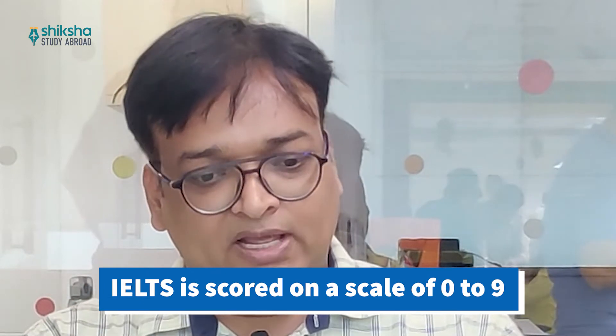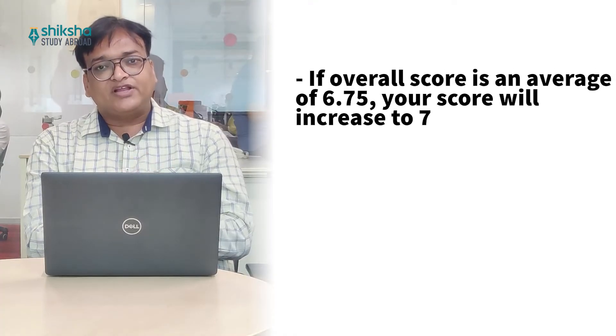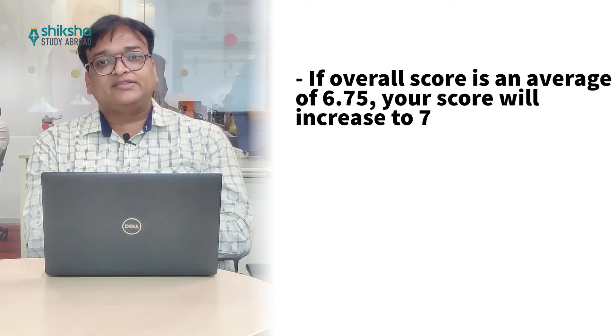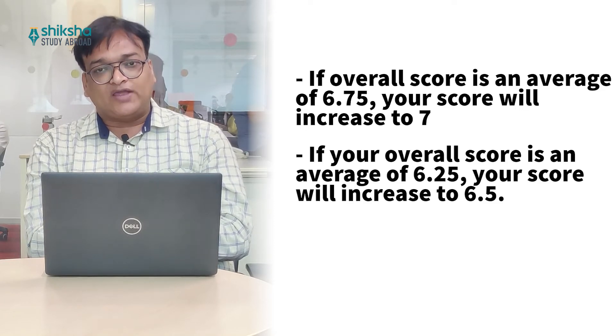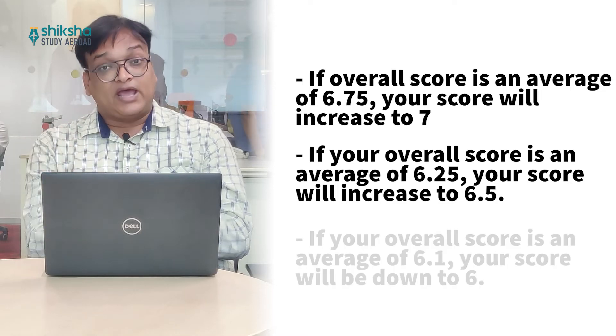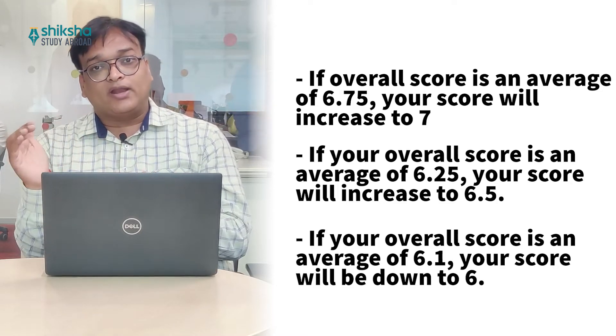The IELTS overall band score is calculated by taking the mean score of all four sections: speaking, listening, reading, and writing. The score for each section is weighted equally. The candidate's overall band score is rounded to the nearest half or whole band. For example, if your average is 6.75, it rounds up to 7. If your average is 6.25, it becomes 6.5. If your average is 6.1, it rounds down to 6.